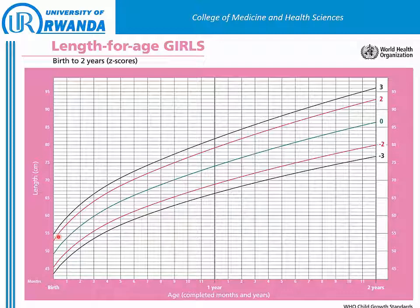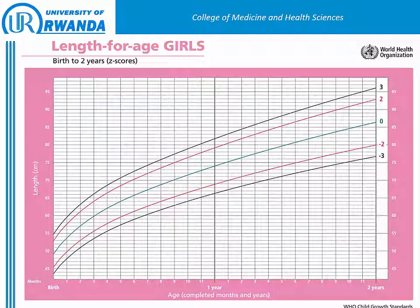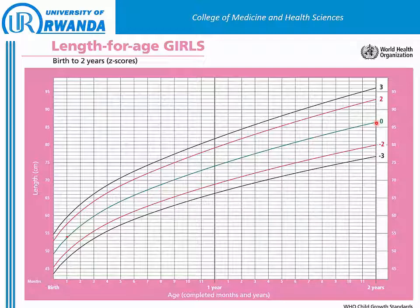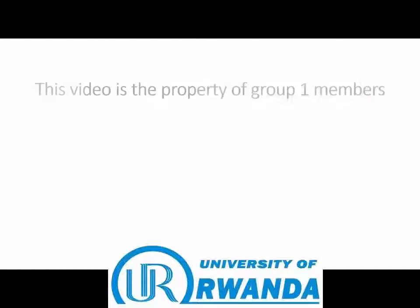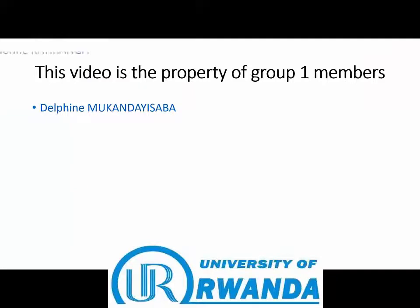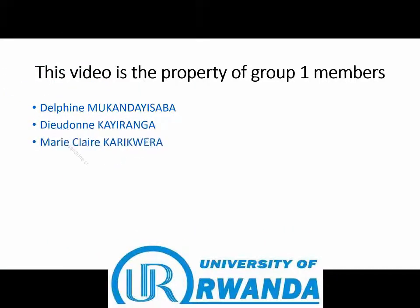To plot it, we find the junction of these findings. The junction of 54 centimeters with one month is over here, and we make a mark. We write it down: 54 centimeters and one month. Then we will check the Z-score of this child. By using this green line, we will see that the Z-score of this child is over here.